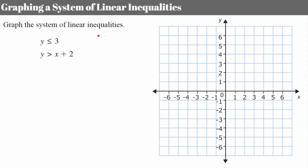Your turn. I would like you to graph the system. You're going to graph each inequality shading in their half plane solutions, and then the part that intersects and overlaps is going to be your solution set. Good luck. Come back and hit play when you're ready to check your work.